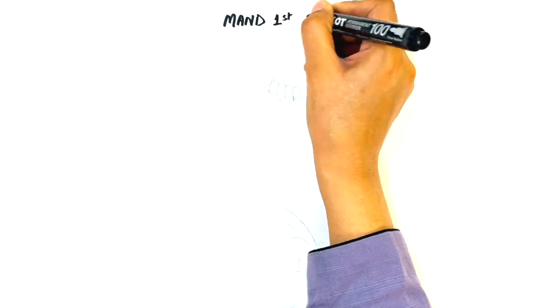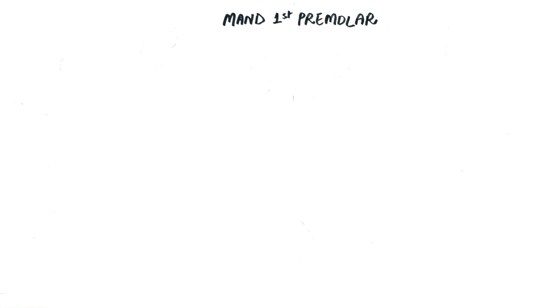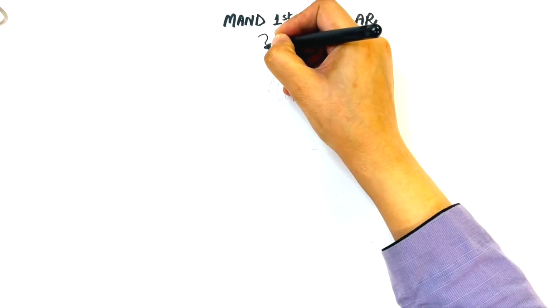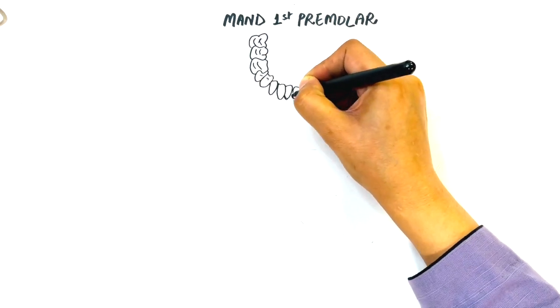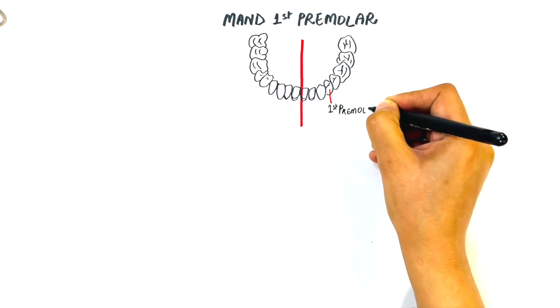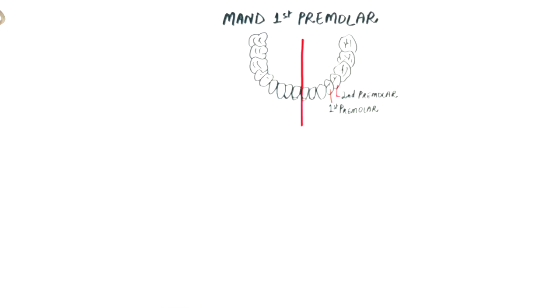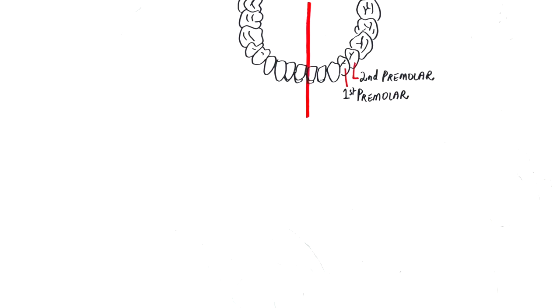In today's video we will look at the mandibular first premolar. Premolars, as they mostly have two cusps, are known as bicuspids. There is a total of eight premolars in the oral cavity, with two located in each quadrant — the first and second premolars in both upper and lower jaws. The first premolar is the fourth tooth from the midline, while the second premolar is the fifth. The focus of this video is the first premolar only.